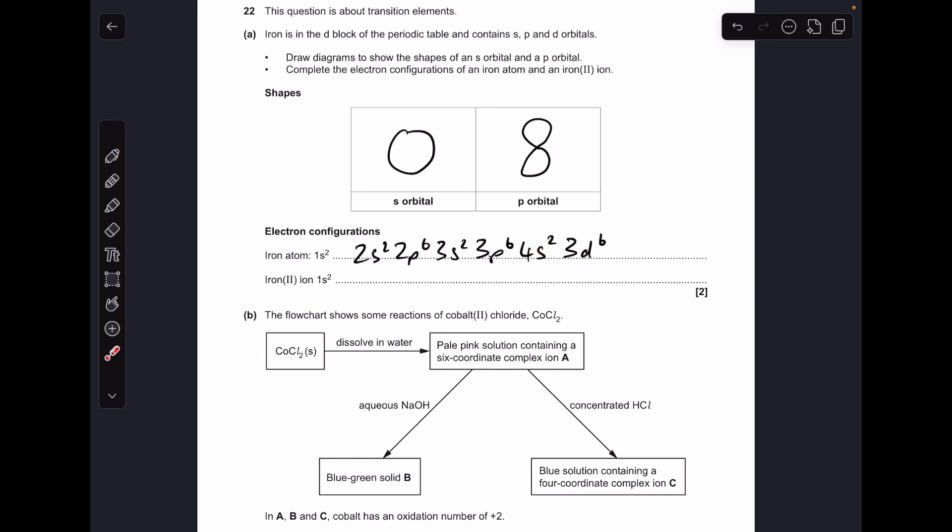And then for the Fe²⁺ ion, remember it's the 4s electrons that are lost before the 3d, so we lose both of those 4s electrons and we end up with that for the configuration of the ion.